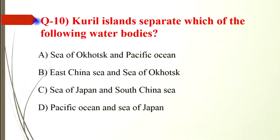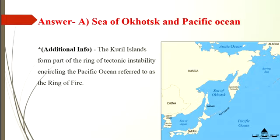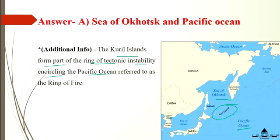Question number 10: the Kuril Islands separate which water bodies? The correct answer is option A — the Sea of Okhotsk and the Pacific Ocean. The Kuril Islands separate the Pacific Ocean from the Sea of Okhotsk. The Kuril Islands form part of the ring of tectonic instability circling the Pacific Ocean, referred to as the Ring of Fire.